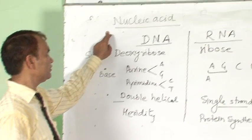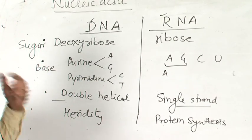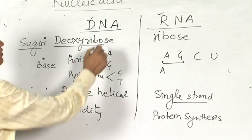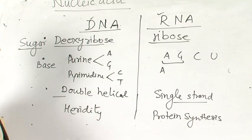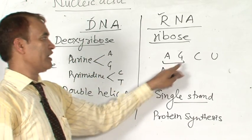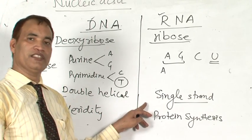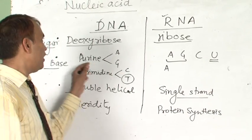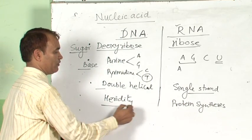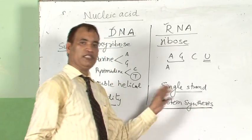The last topic in this chapter is nucleic acids — DNA and RNA. In DNA, the pentose sugar is deoxyribose; in RNA, it is ribose. DNA has purine bases (adenine and guanine) and pyrimidine bases (cytosine and thymine). RNA has adenine, guanine, and cytosine, but thymine is replaced by uracil. DNA has a double helical structure; RNA is single stranded. DNA is found in the nucleus and in organelles like mitochondria; RNA is found in both the nucleus and the cytoplasm. DNA is responsible for heredity — transmitting characters from parents to offspring — while RNA is responsible for protein synthesis, which occurs in the ribosome.